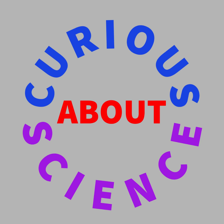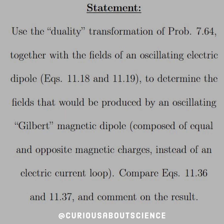Here's a quick little trick, maybe not tricky, but a unique question. The statement says: use the duality transform of problem 7.64, the last question in that chapter, together with the fields of an oscillating electric dipole, equation 18-19, to determine the fields that would be produced by the oscillating 'Gilbert dipole,' composed of equal and opposite magnetic charges instead of a current loop. Compare equations 36 and 37 and comment on the result.